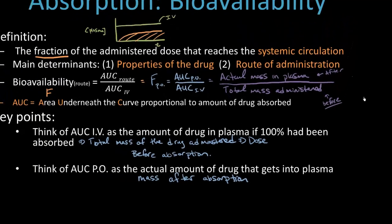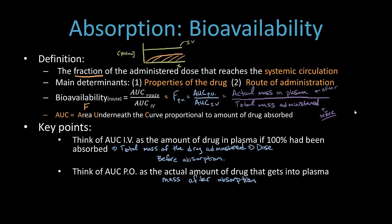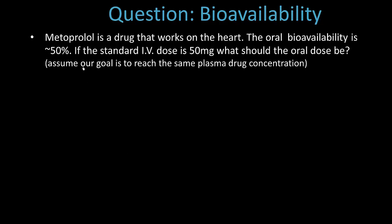Let's do a problem to make sure you get it. Metoprolol is a drug that works in the heart. The oral bioavailability is 50%. If the standard IV dose is 50 mg, what should the oral dose be? Our goal is to reach the same plasma drug concentration in both cases. I can almost guarantee you'll get some permutation of this question on a major exam, so you must know this concept.